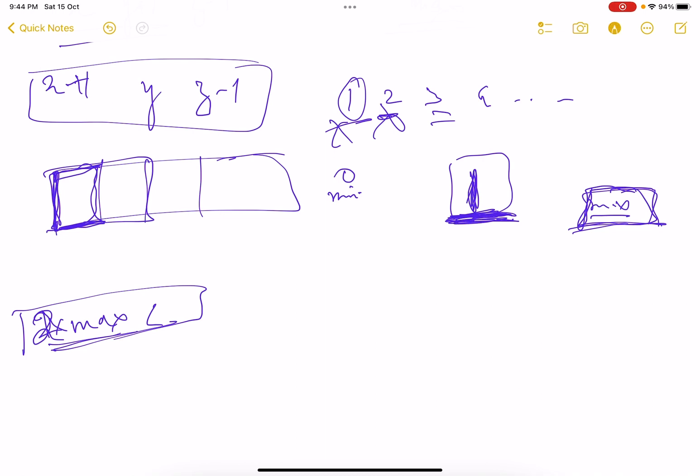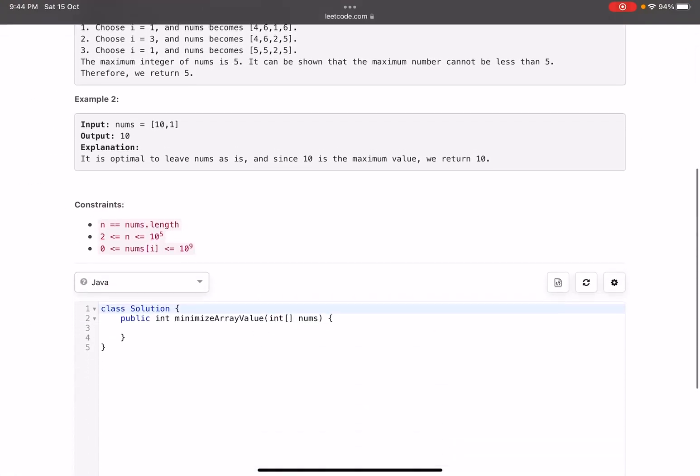So, this is what we do, we choose this, if this satisfies our condition, so we make it our answer, and we check that, is a value lesser than this, also giving us a valid array? So, we do a binary search, you find this, if this is valid, you move to this part, if you find this to be invalid, move to this part, and so on, basic binary search. So, let me just show you the code.